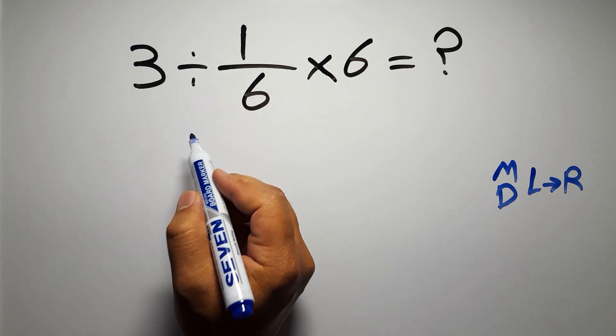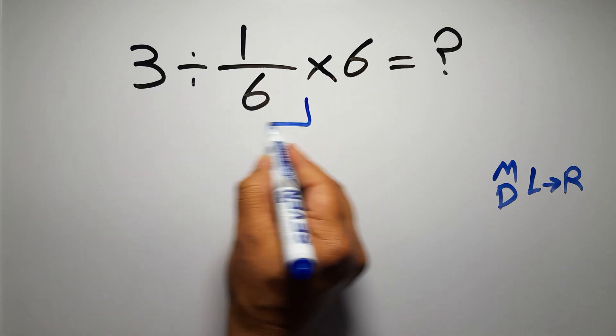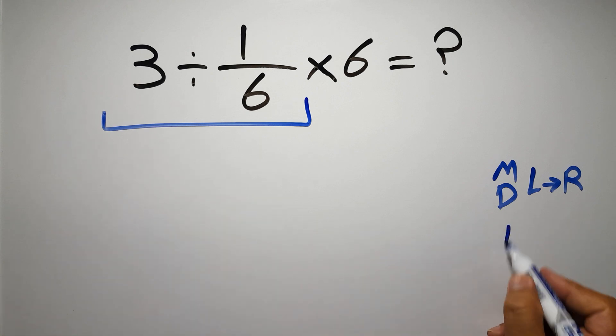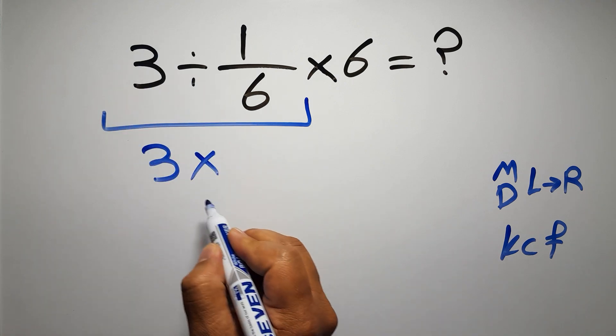So first, this division: three divided by one over six. According to the KCF rule—K stands for keep, C stands for change, and F stands for flip—we can write: keep the first fraction, change division to multiplication, and flip the second fraction.